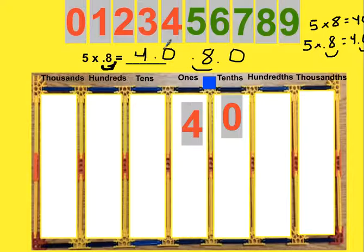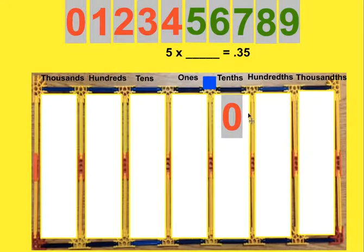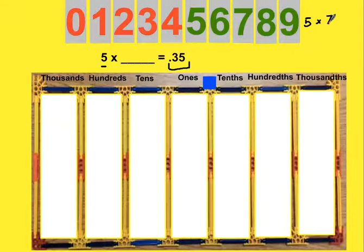This line of thinking also applies when we're missing one of the factors. For instance, in the following problem, 5 times what is 0.35? Remember, we want to first just think about it in terms of whole numbers. I know that 5 times some number will be equal to 35. That's how I want to think about it. And then I want to get back into the decimal at the end. So I'm going to use that math fact that I know. I know that 5 times 7 equals 35. So now I have all the digits correct.